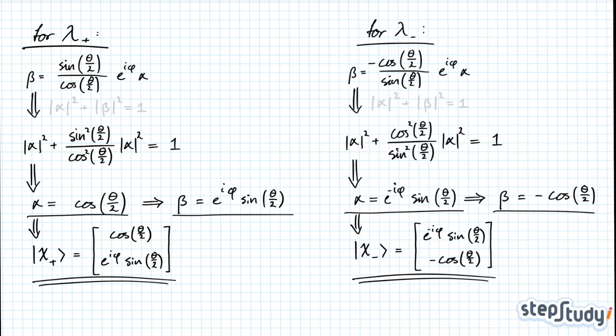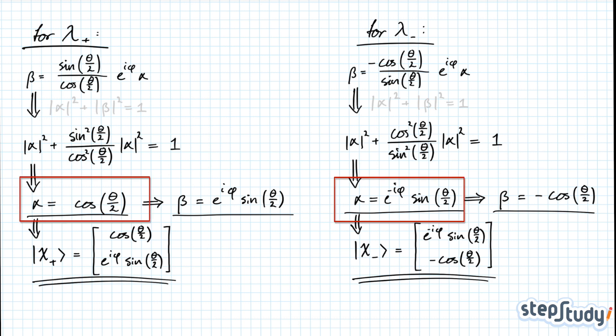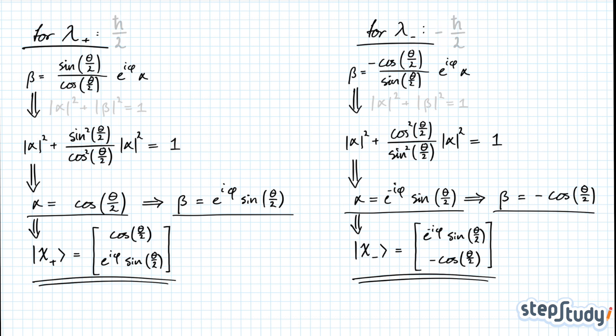For the negative eigenvalue, you use the same logic, except you use the other trigonometric identity — namely that 1 plus cosine of theta equals 2 times cosine squared of theta over 2. At this point you'll have both the alpha and beta components for both eigenvalues, so you will have found both eigenvalues and both eigenspinors.